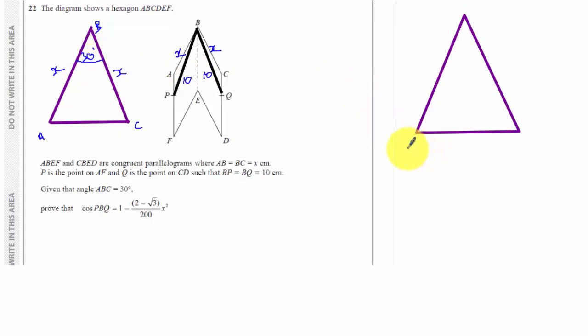On the triangle over here, I'm putting P, Q, and B. I know these lengths are 10. And this whole question is about working out the cosine at this angle up here, PBQ.